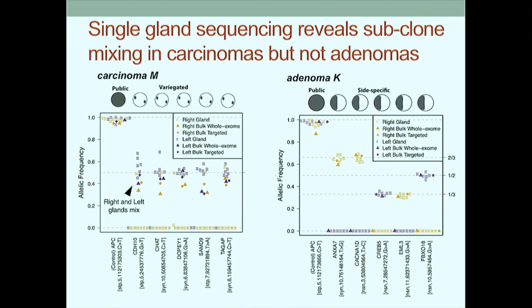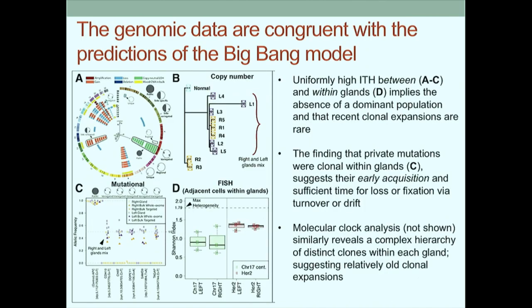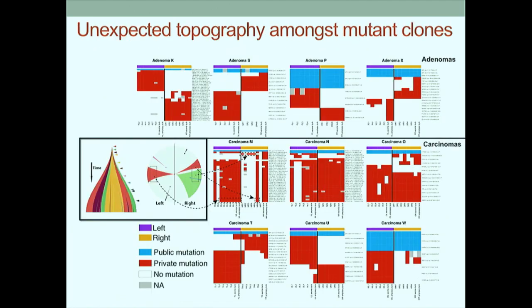Intriguingly, when we looked at adenomas, we again had a clonal APC control, but instead of seeing variegation, mutations were restricted to either the right or the left and absent entirely from the other region of the tumor. This pattern holds true across all adenomas we examined: no mixing, with mutations spatially segregated between the left and right sides. In contrast, for all carcinomas examined, we see mixing between mutations - variegation observed at both the mutational and copy number level.